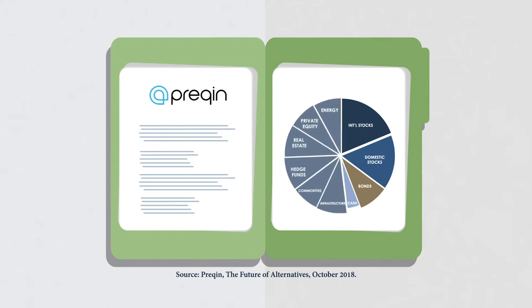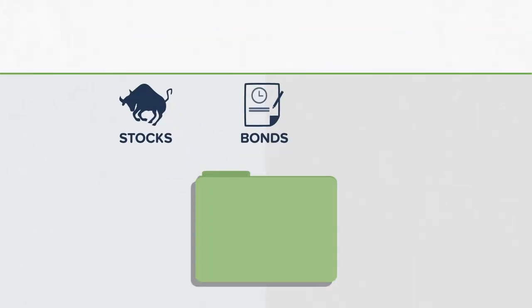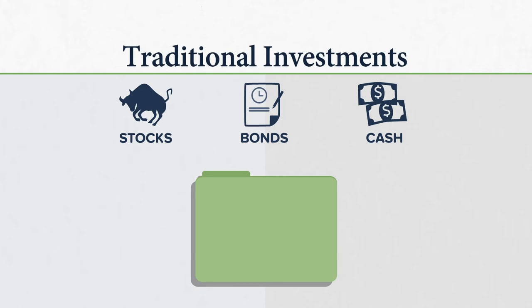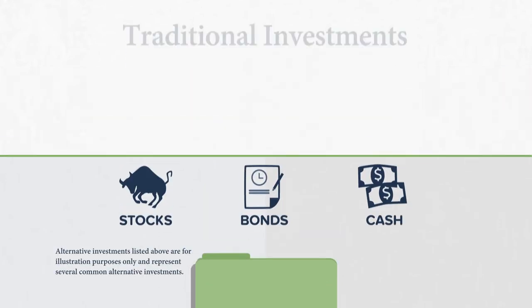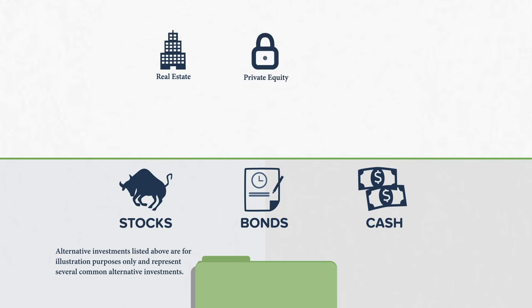So what are alternative investments? Well, we know that stocks and bonds and cash are considered traditional investments. In general, anything outside of that might be considered an alternative investment. Alternative investments you may have already heard of include real estate, private equity, hedge funds, infrastructure, commodities, energy, and the like.